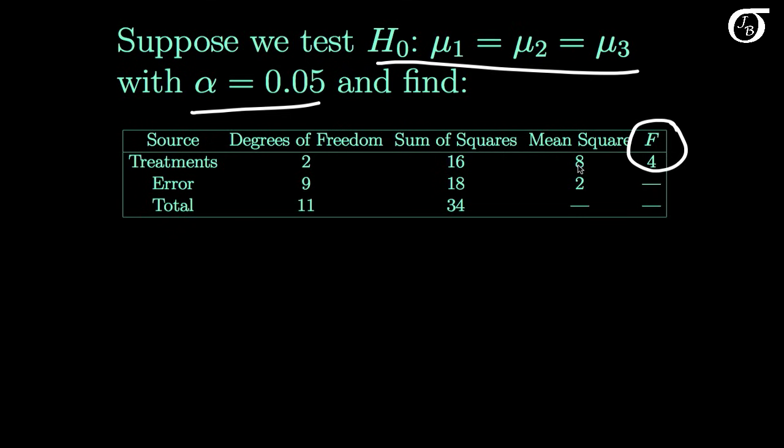That F statistic is a ratio of mean squares, the ratio of mean square treatment to mean square error, and here that is simply 8 over 2, and that's where this 4 came from.